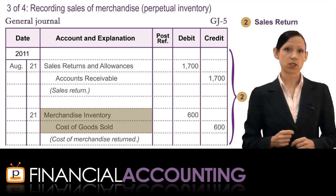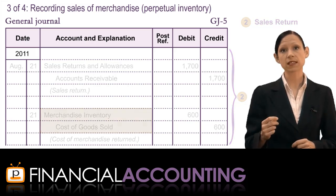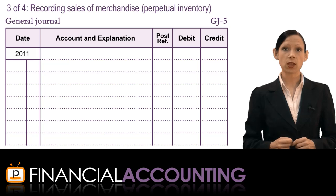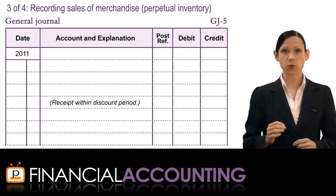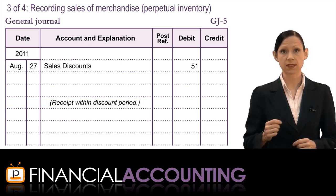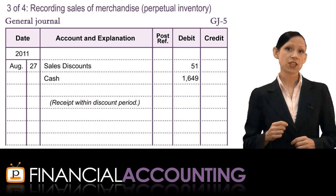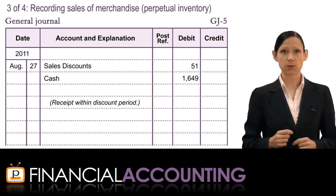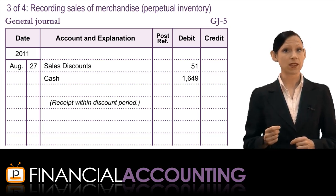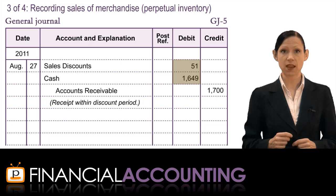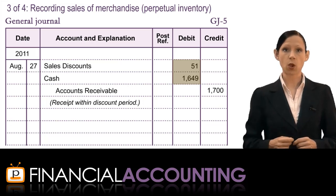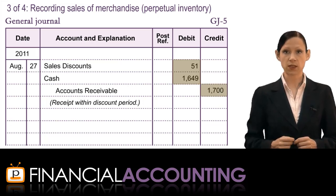The final sales transaction covered today is when we offer customers a sales discount for early payment of their invoice. This discount is a reduction in revenues, so it is recorded as a debit to the contra revenue account sales discounts. The cash account is also debited for the cash received from the customer. The corresponding credit goes to accounts receivable for the combined value of the cash receipt plus the sales discount, to reflect that the customer no longer owes the full invoice amount.